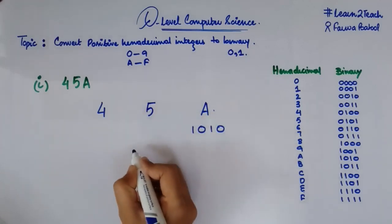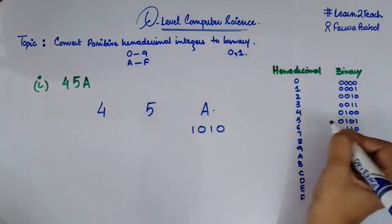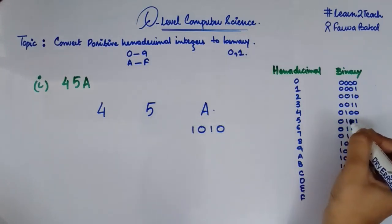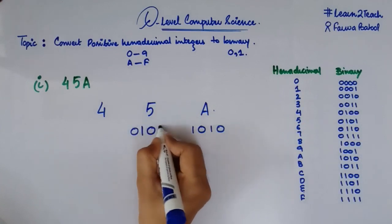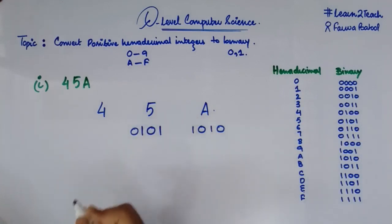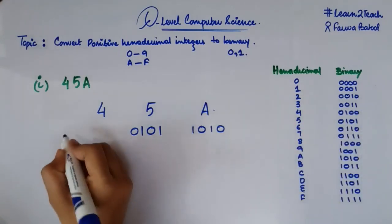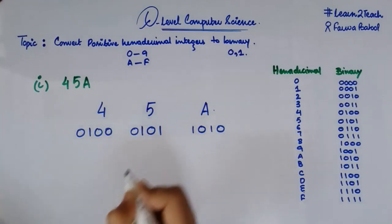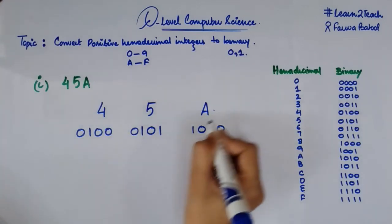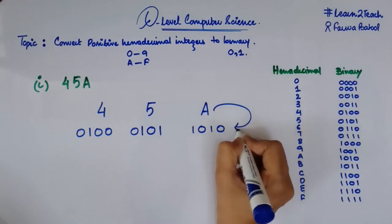Moving to 5: 5 equals 0101 in binary. And 4: 4 equals 0100 in binary. So this is how we convert each hexadecimal digit into its binary equivalent.